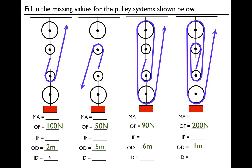Let's start with the first one. We want to get the mechanical advantage for this first pulley system. We said in class, and you've seen in the previous video, that in order to get the mechanical advantage, just count the number of strings right across. You can see one, two strings — mechanical advantage two. That's all there is to it. Count the strings.